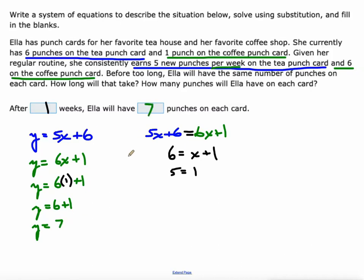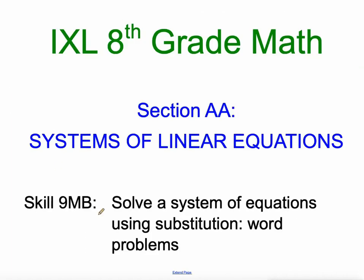Basically, you've got to write equations in slope intercept form, and then set them equal to each other. And then figure out what each variable equals. This will help you with, I believe it's the 8th skill in section double A right now, which is solve a system of equations using substitution, word problems.